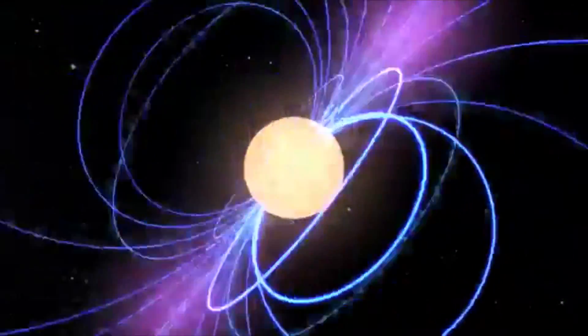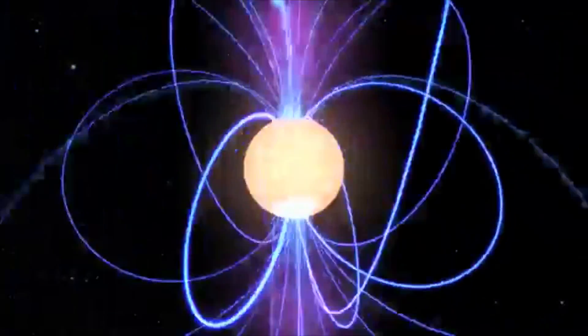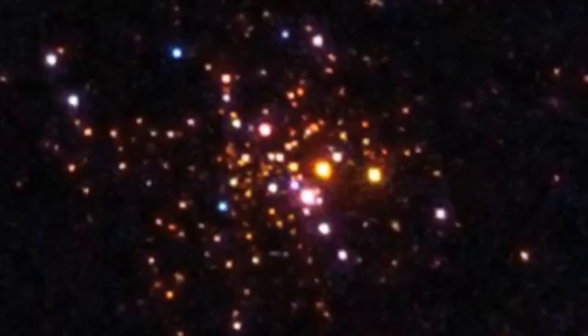The densest object in the entire known universe outside of black holes. Using images like this one of globular stars, astronomers have figured out the relationship between a star's mass and how big they are.